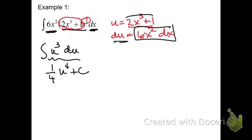So now I can integrate this. This is an easy power rule, and it's u to the 4th divided by 4 plus c. Now change u back into what it was, and you get 1/4, 2x cubed plus 1 to the 4th plus c. And that's it.